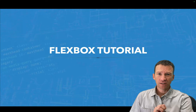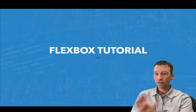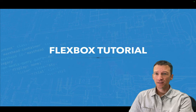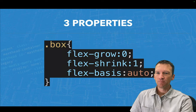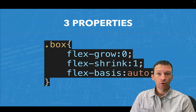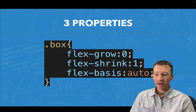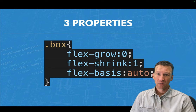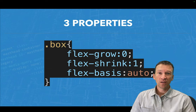There are essentially three properties that you need to know in order to learn Flexbox, and I want to first show you these three properties. They are, as you can see here on screen, the Flex Grow property, the Flex Shrink property, and the Flex Basis property. Understanding these properties is really essentially key to learning Flexbox.